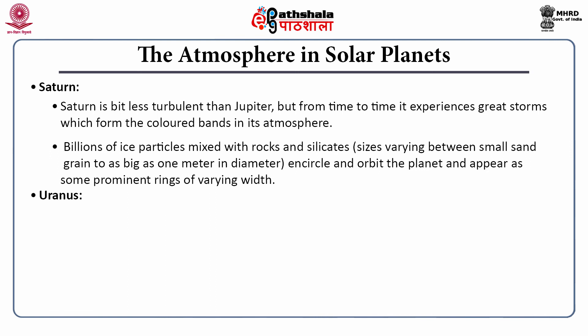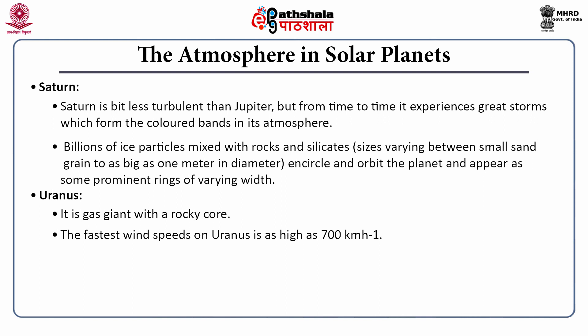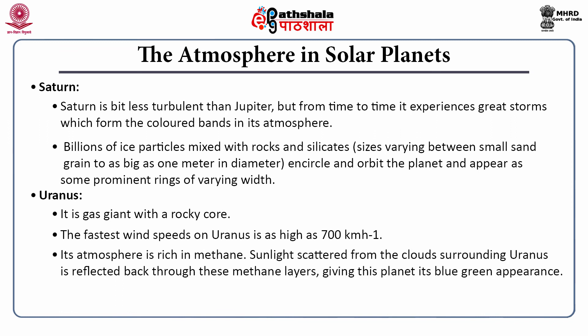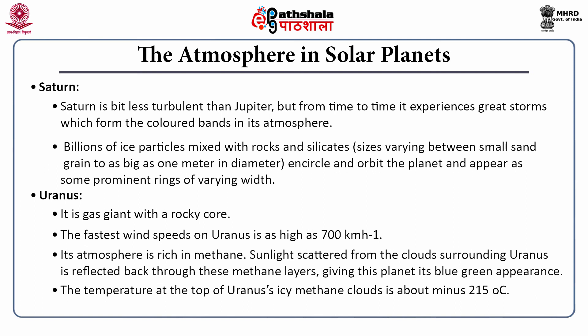Then comes Uranus, a gas giant with a rocky core. The fastest wind speeds on Uranus were recorded as high as 700 kilometers per hour. Its atmosphere is rich in methane. Sunlight scattered from the clouds surrounding Uranus is reflected back through the methane layers, making the atmosphere appear blue-green. The temperature at the top of Uranus's icy methane cloud layer is about minus 215 degrees centigrade.